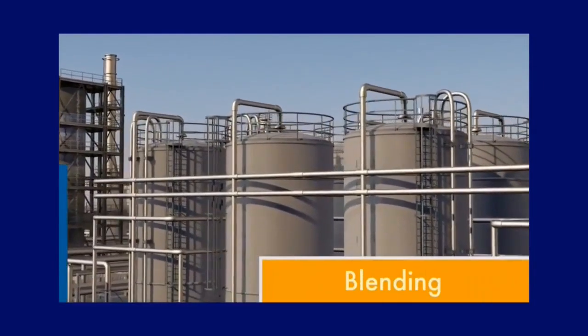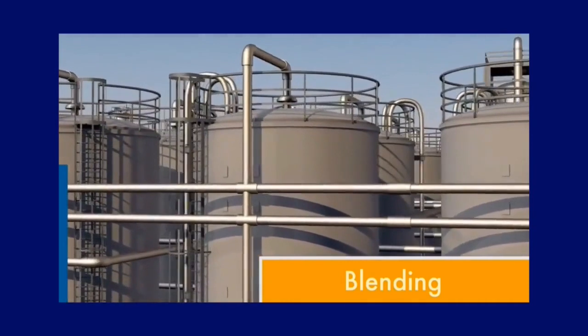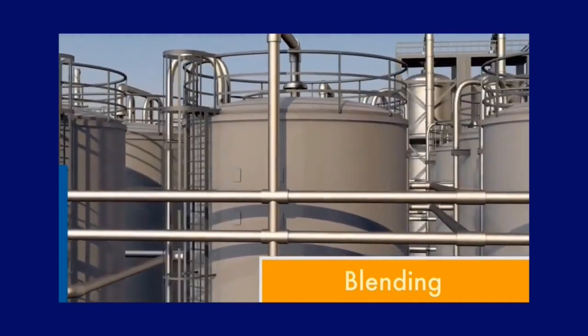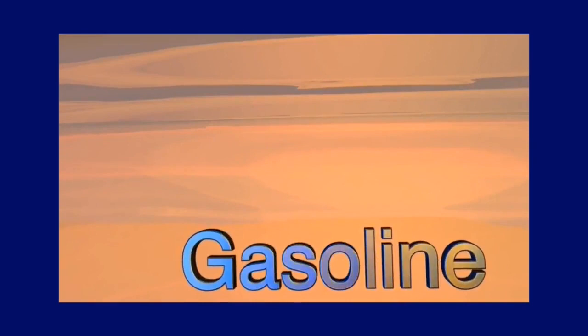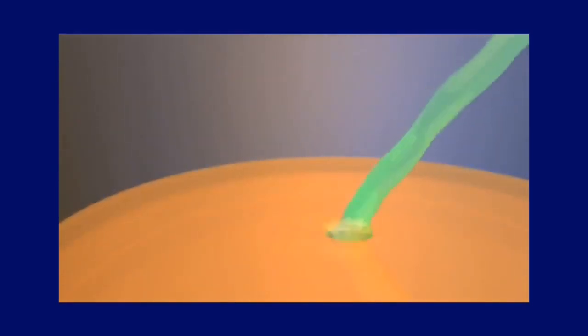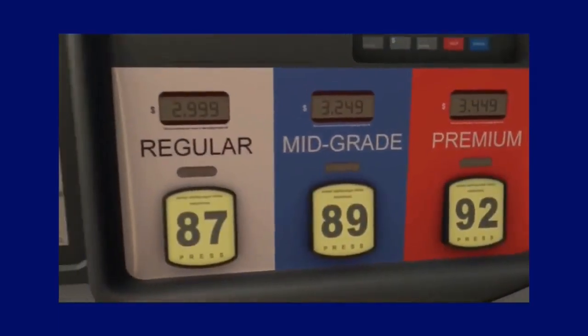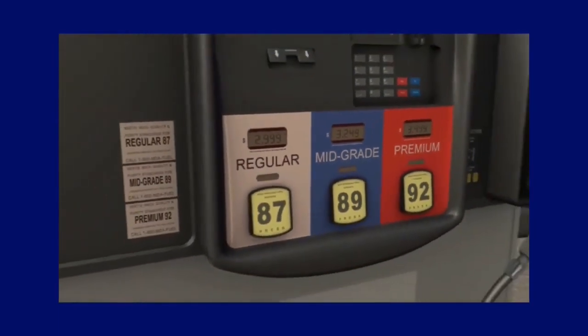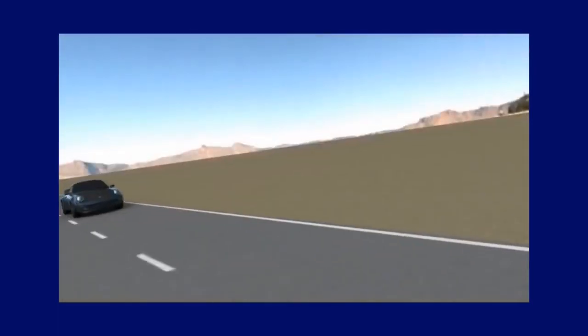Blending is a process of mixing different refinery products to make finished petroleum fuels. Gasoline, for example, is blended to achieve octane standards, creating the grades of gasoline you see at the pump — regular, mid-grade and premium — that are necessary to meet the needs of specific engine types.